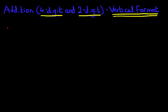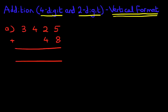So let's have a look at our first example. There we go. We have 3,425 plus 48. Let's label the columns. You don't have to, but we're doing this to illustrate what we're doing. Units, tens, hundreds, and thousands.